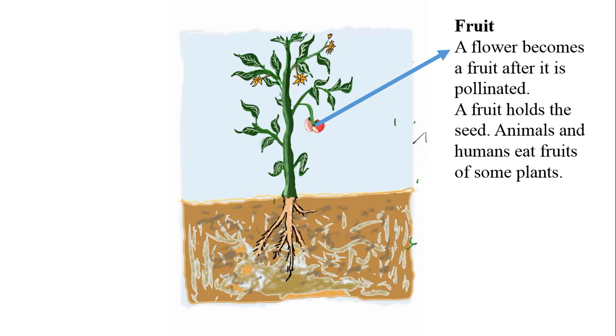This is a fruit. A flower becomes a fruit after it is pollinated. A fruit holds the seed. Animals and humans eat the fruits of some plants.